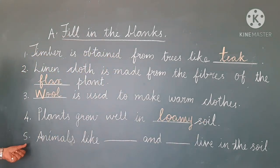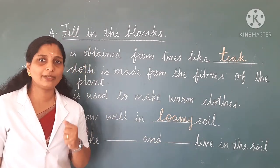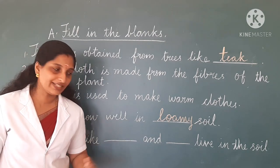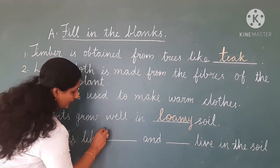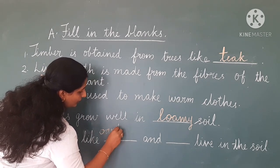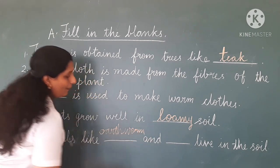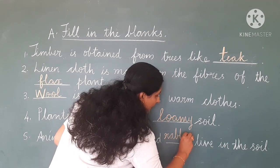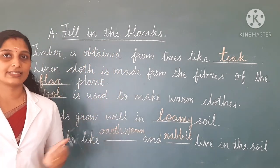Then the last question: animals like blank and blank live in the soil. Which animals can you see in the soil? Any two you can write. I'm going to write earthworm. E-A-R-T-H-W-O-R-M. Earthworm. And rabbit. R-A-B-B-I-T. Rabbit. Hope all of you have completed this exercise.